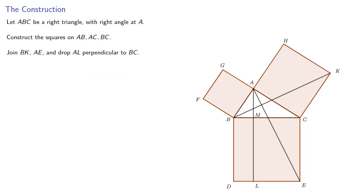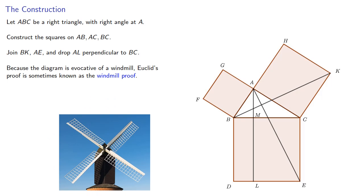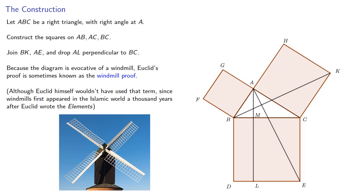Now because a diagram is evocative of a windmill, Euclid's proof is sometimes known as the windmill proof, although Euclid himself wouldn't have used that term since windmills first appeared in the Islamic world a thousand years after Euclid wrote the Elements.